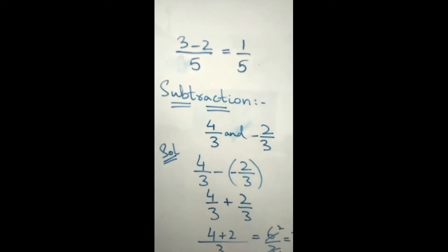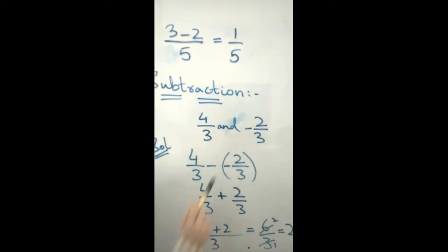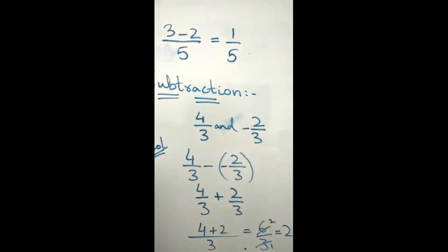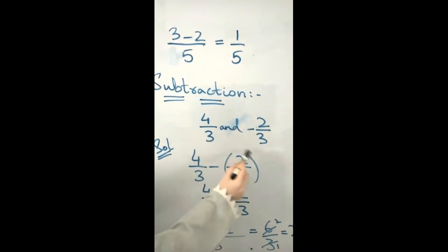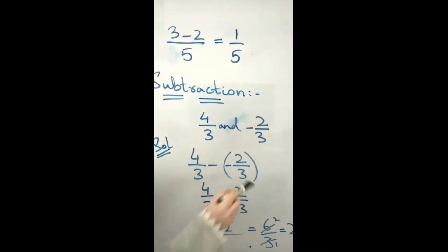Now comes the subtraction. 4/3 and -2/3. We want to subtract these two rational numbers. I will write 4/3 minus (-2/3). This is the second rational number.